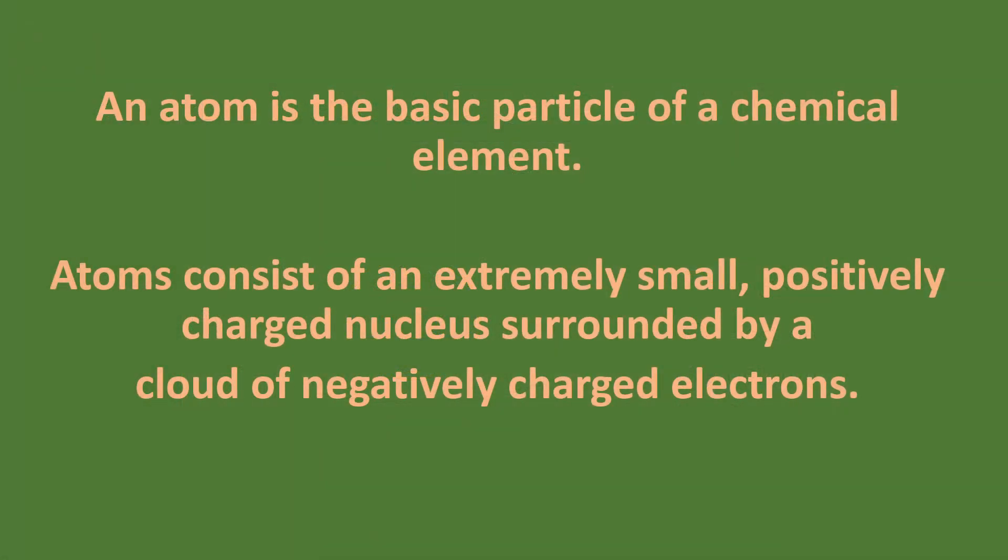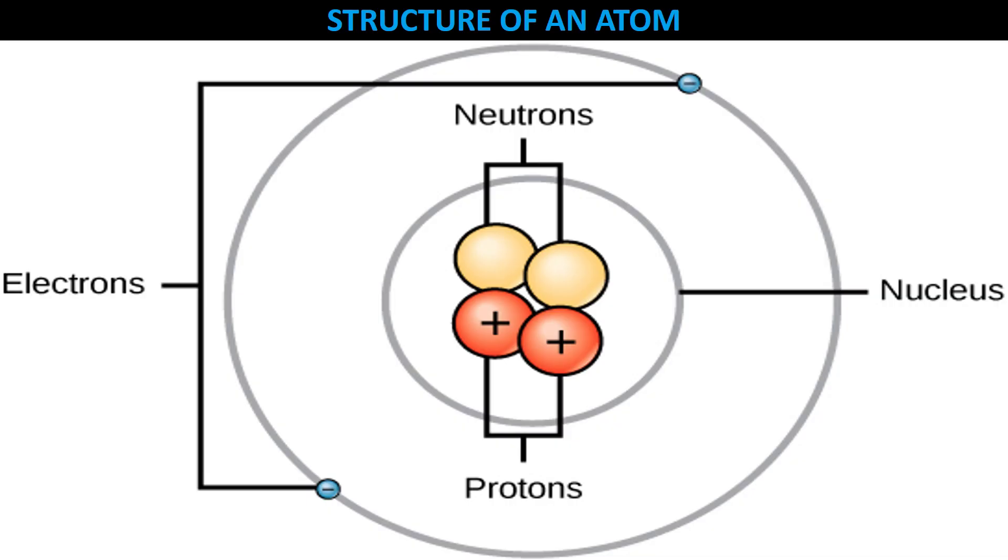An atom is the basic particle of a chemical element. Atoms consist of an extremely small, positively charged nucleus surrounded by a cloud of negatively charged electrons. Primarily, the atomic structure of matter is made up of protons, electrons, and neutrons.